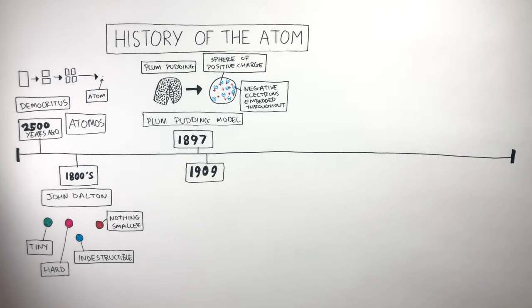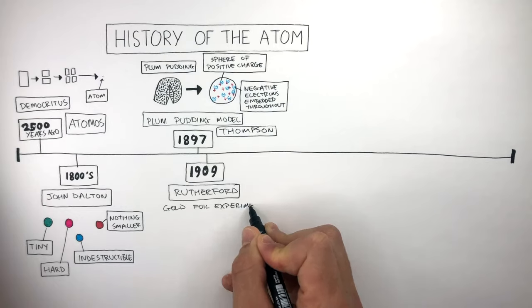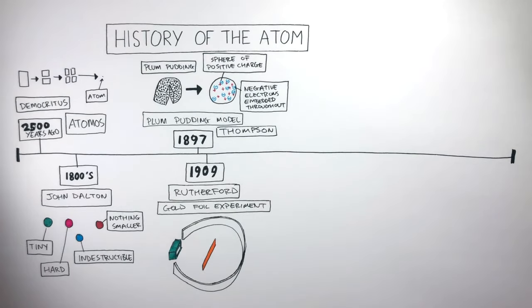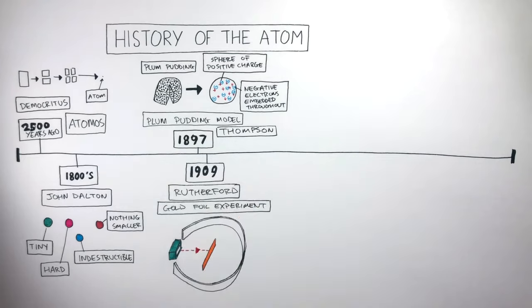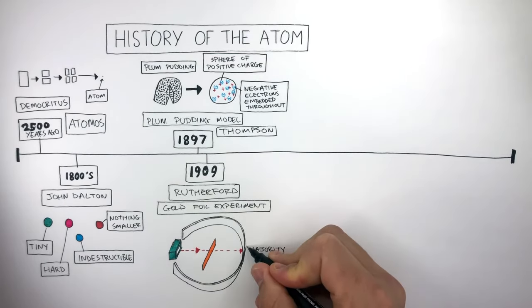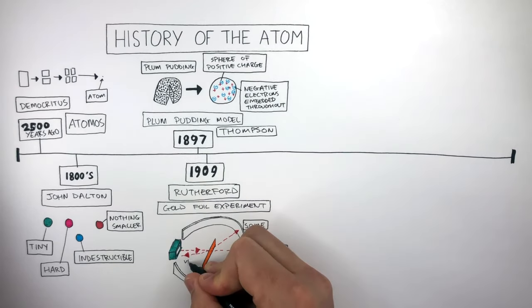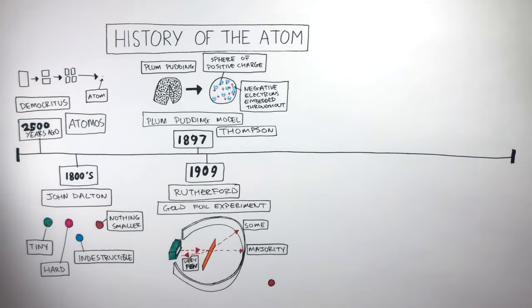In 1909 Rutherford and his team conducted the famous gold foil experiment, which consisted of an alpha gun, a very thin piece of gold foil, surrounded by a fluorescent screen to detect the alpha particles. When the alpha gun fired the alpha particles, the majority went straight through. Some were deflected to the side, and very few were deflected straight back—only one in 8,000.